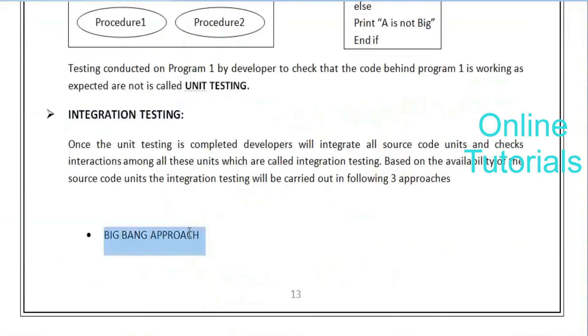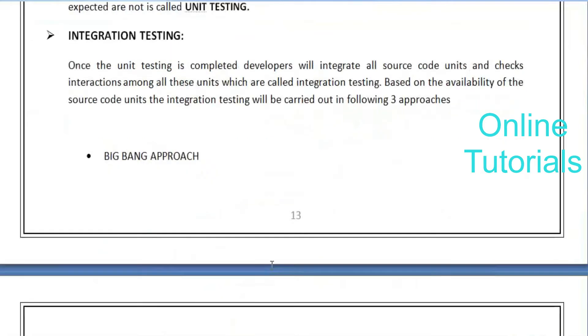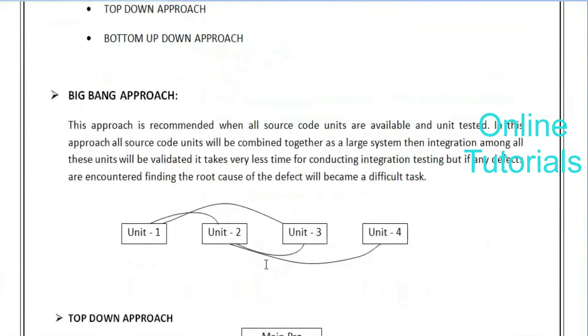Integration testing can be done in three ways. One of those ways is the big bang approach - that's what we've been discussing. This is the procedure they follow in big bang approach, and its main drawback is that finding a defect is very difficult.